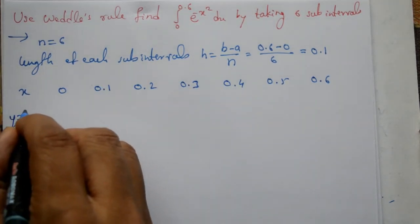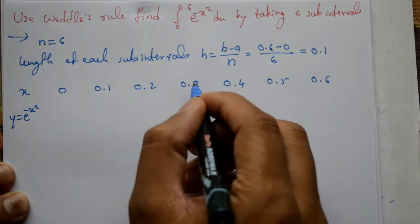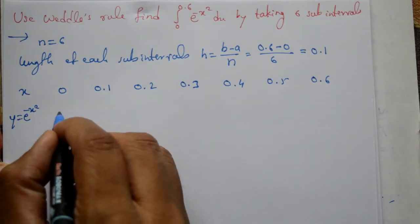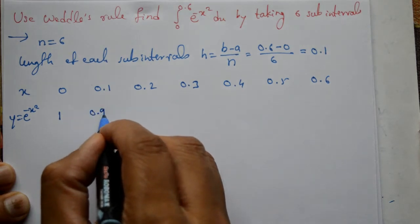Now y equals e raised to minus x square. For x values 0, 0.1, 0.2, 0.3 and so on. When x equals 0, e raised to 0 is 1. When x equals 0.1, we get 0.99.